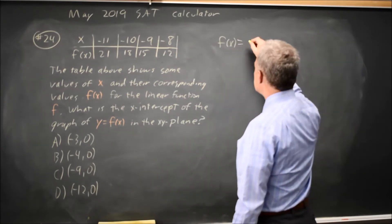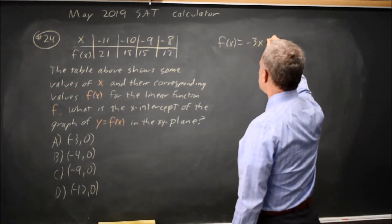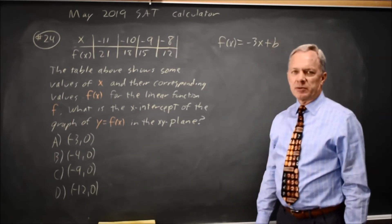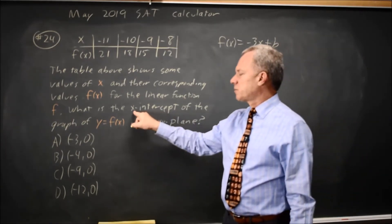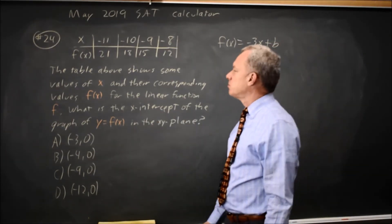So the slope is -3. f(x) = -3x + b, where b is the y-intercept. Remember, they're asking for the x-intercept, not the y-intercept, so b will not be our answer.